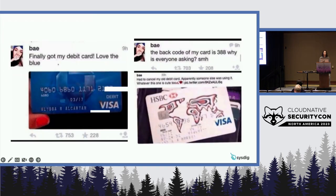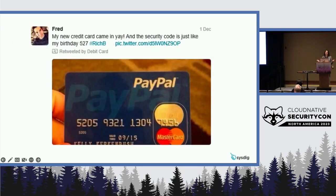Attack number two focuses on compromised credentials. When I was looking for a real-life example of a compromised credential, unfortunately it did not take me very long to find that many people think it's a great idea to post their credit cards on social media with the security code. I'm not saying many developers would do something like this, but there have been known cases of developers accidentally putting access keys or credentials in code that is posted publicly and not encrypted. There are many different ways that credentials can be leaked.